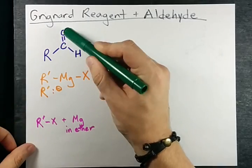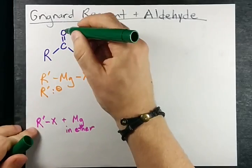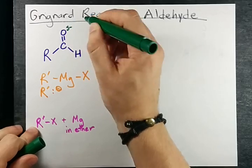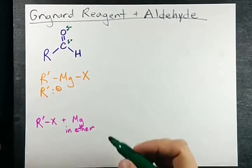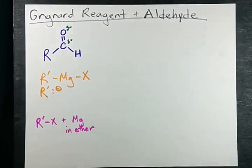Now in this molecule, the aldehyde, we have an electronegative atom, the oxygen, I'm going to give it a little delta minus and this carbon is a little bit delta plus because it's connected to the electronegative atom.